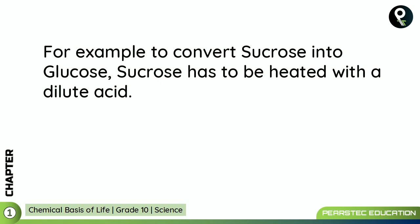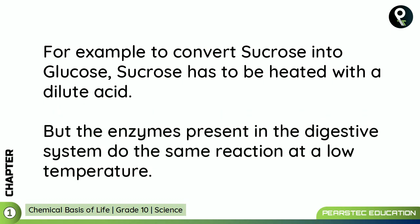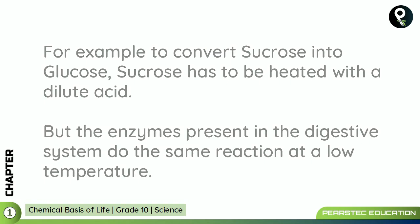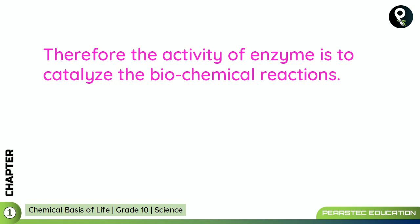For example, to convert sucrose into glucose, sucrose has to be heated with dilute acid. But the enzymes present in the digestive system do the same reaction at a low temperature. So inside our body there is a mechanism — enzymes — that can carry out the same chemical reaction without heat.